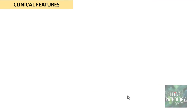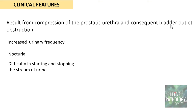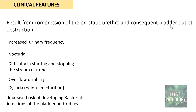The clinical features of BPH are due to compression of the prostatic urethra and consequent bladder outlet obstruction. The most common features include increased urinary frequency, nocturia, difficulty in starting and stopping the urinary stream, overflow dribbling of urine, and sometimes painful urination or dysuria. Because of urine collection in the bladder, there is residual urine which increases the risk of bacterial infections of the bladder and upstream infection of the kidney.